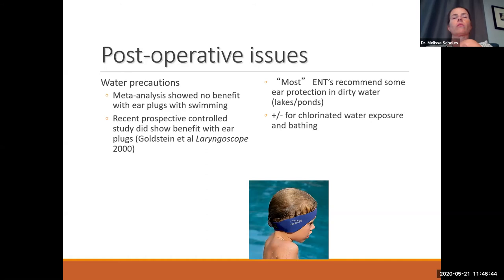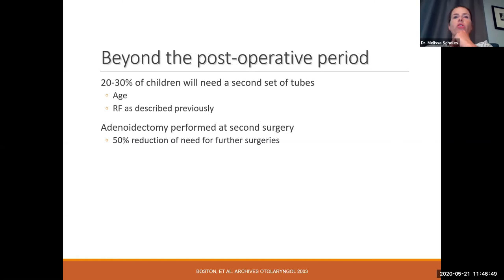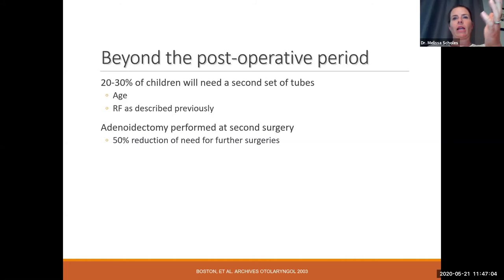20 to 30% of children will need a second set of ear tubes, with younger age at first tube placement being a major risk factor. We recommend adenoidectomy most of the time for second ear tube surgeries because it reduces the need for further ear tubes by 50%.